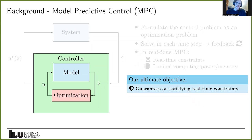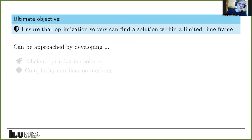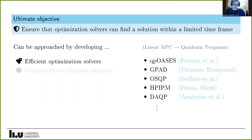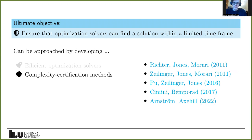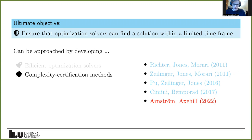Our ultimate objective is to provide guarantees on satisfying these time constraints — that we can solve optimization problems within the limited time frame allocated. This objective can be approached from two complementary directions. The first is developing efficient optimization solvers for MPC; specifically for linear MPC we solve a quadratic program in each time step. I'll talk about one solver we recently developed called DAQP. The complementary direction is developing complexity certification methods for existing solvers, which is the main bulk of this presentation.